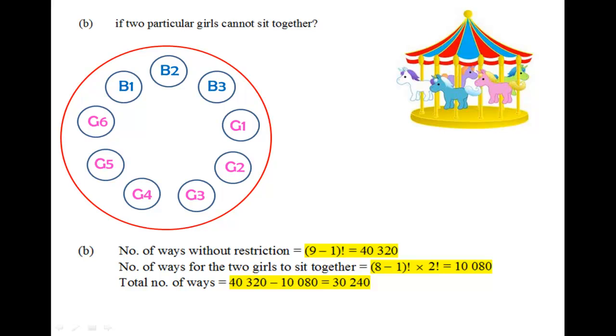So the number of ways without any restrictions will be 9 minus 1 factorial, because we have 9 seats, and being seated in a circular manner, we will have 8 factorial. And how about the number of ways for the two girls to sit together?